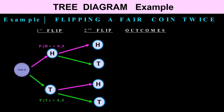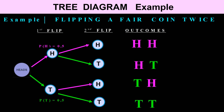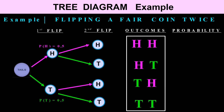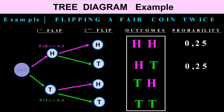Let's list the outcomes. After flipping a coin twice, we can have heads and heads, heads and tails, tails and heads, and tails and tails — four outcomes in total. The probability of heads and heads is 0.5 times 0.5, which equals 0.25. Similarly, heads and tails is 0.5 times 0.5, and tails and tails is 0.5 times 0.5. The sum of all probabilities is exactly one.